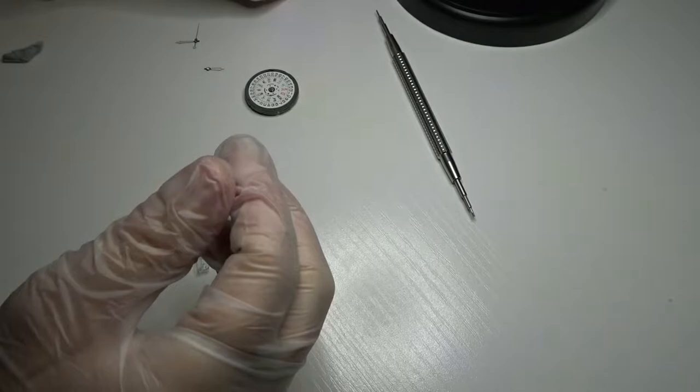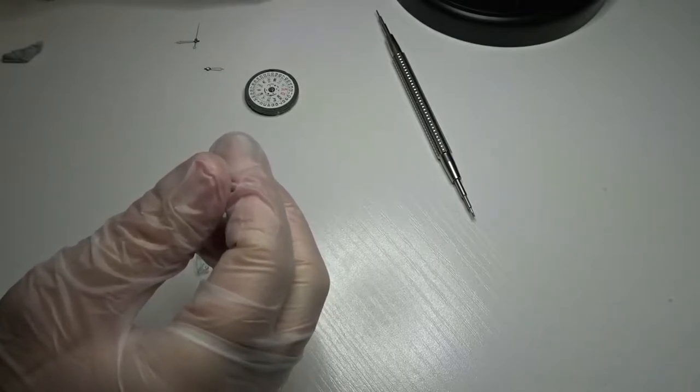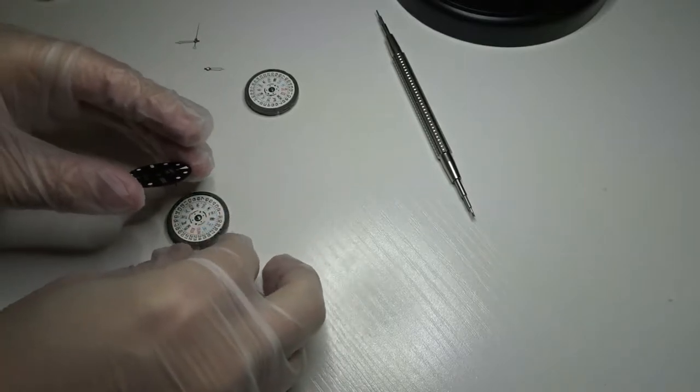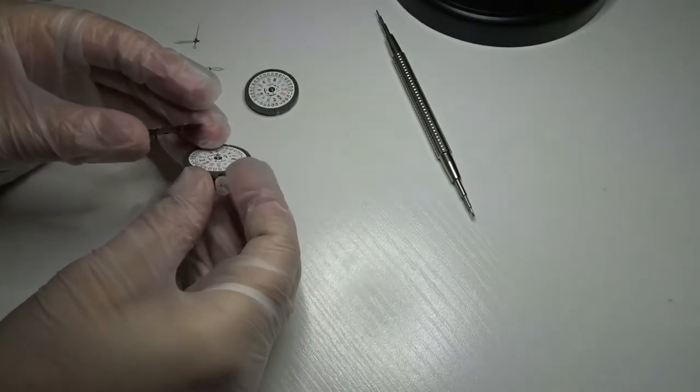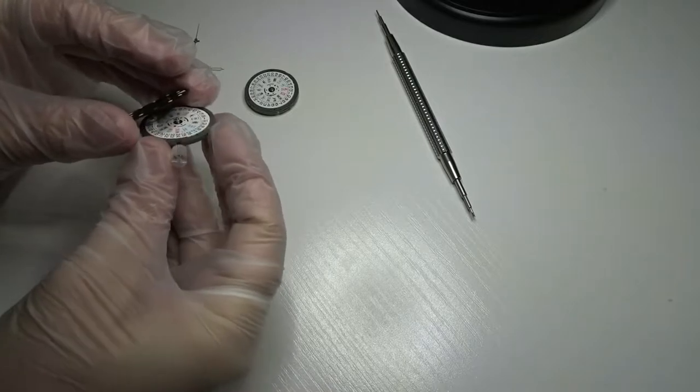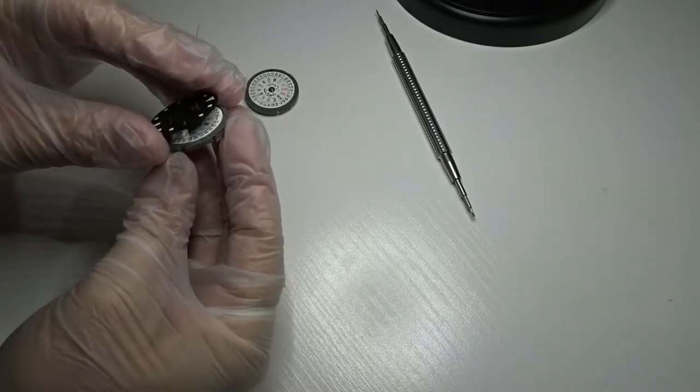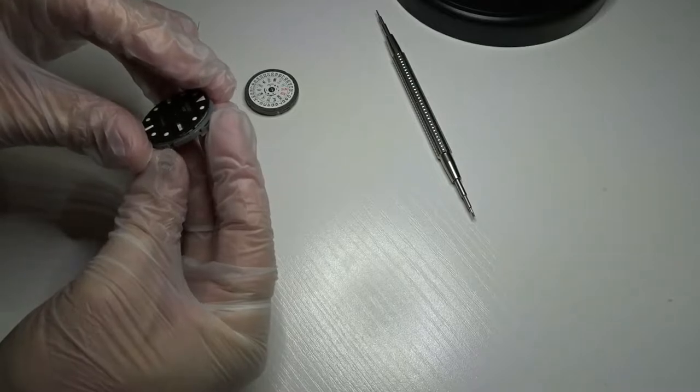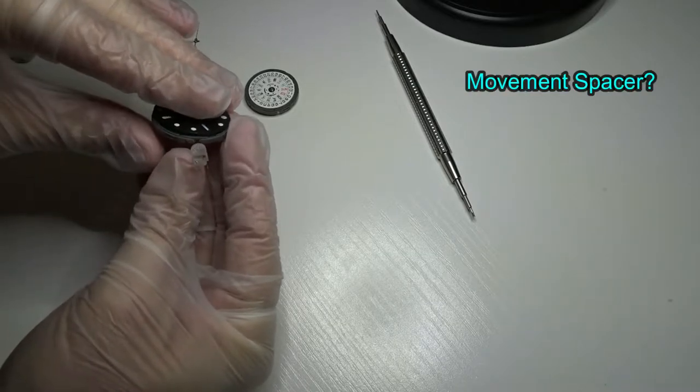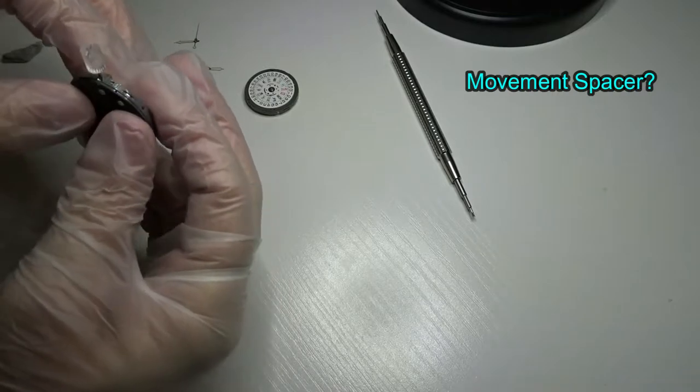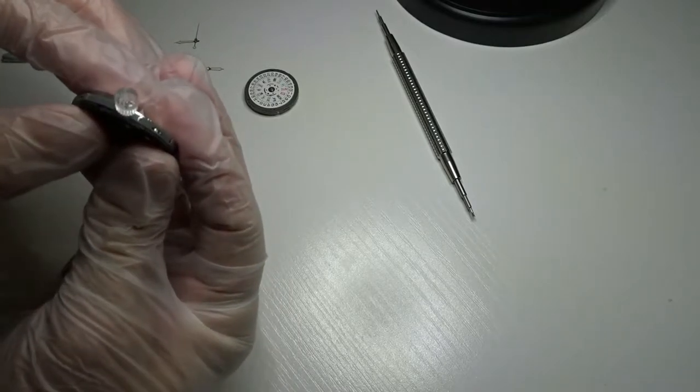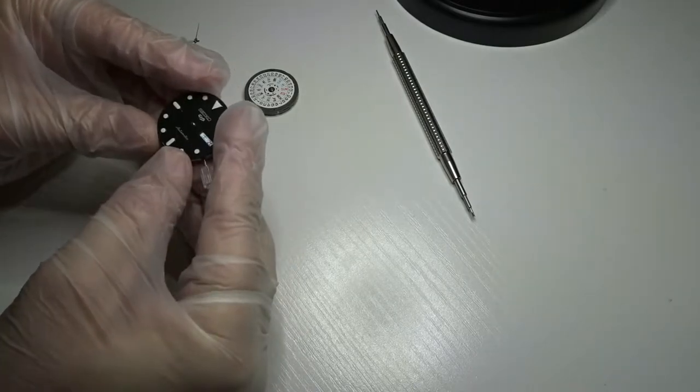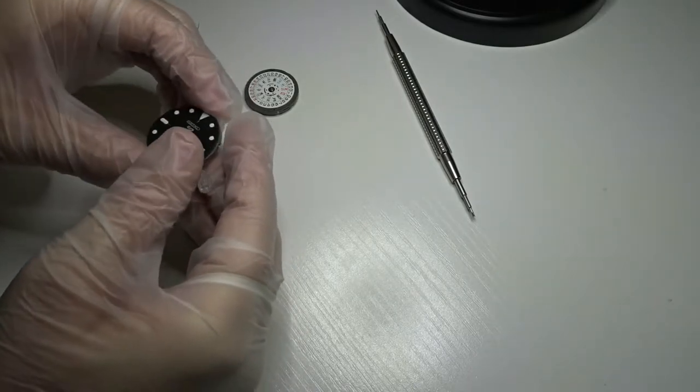So now I just need to put the dial on. This part isn't hard at all, just line up those metal posts that I mentioned with the two holes on the plastic movement holder. I don't know what the technical term for it is, but that gray plastic part, there's two holes. Just make sure that those posts go in there and that it's seated firmly or all the way down.